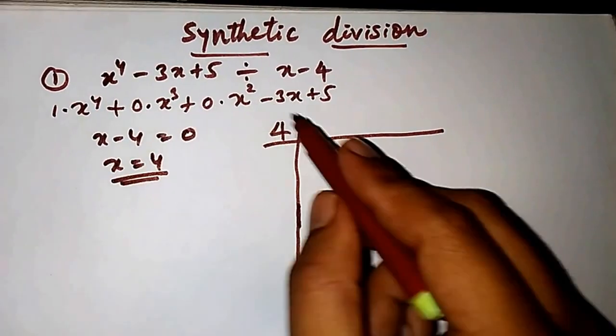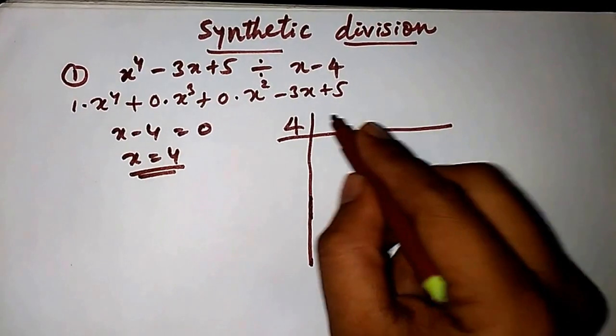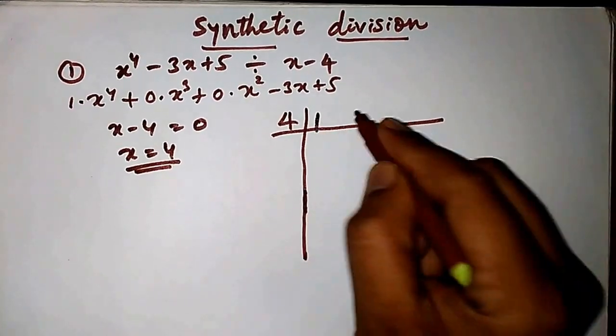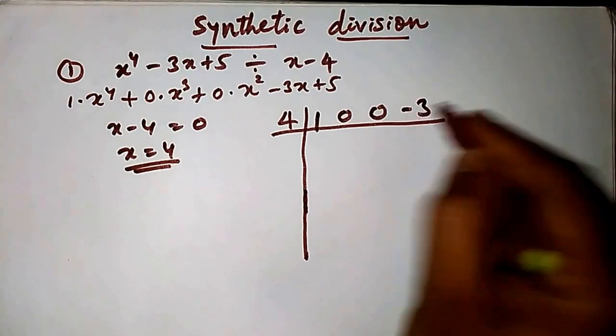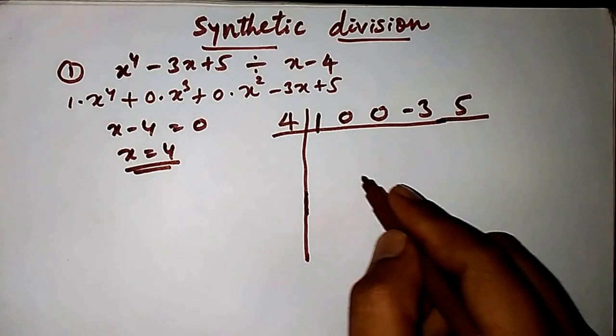Write down the coefficients of the equation x raised to 4 minus 3x plus 5: 1, 0, 0, minus 3, 5.